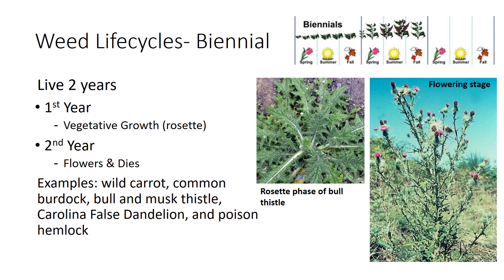Biennial weeds grow from seed any time during the growing season. They normally produce a rosette of leaves close to the soil surface the first year, then flower, mature, and die during the second year. A true biennial never produces flowers or seeds the first year. There are relatively few biennial weeds. Some examples include wild carrot, common burdock, bull and musk thistle, Carolina false dandelion, and poison hemlock.